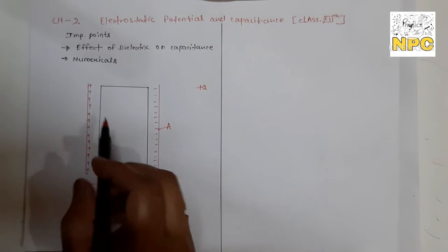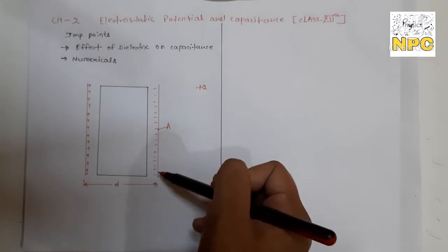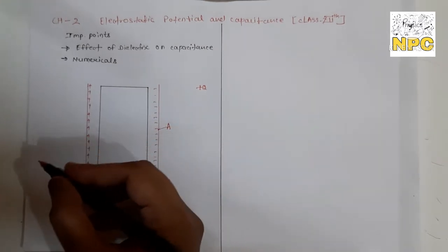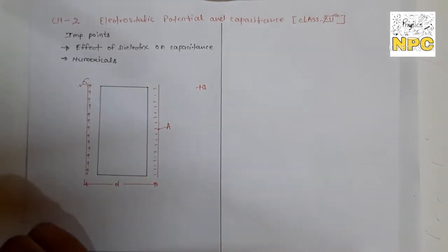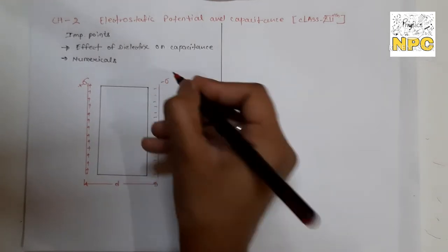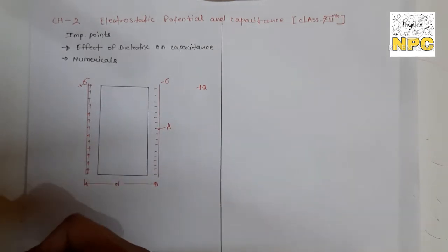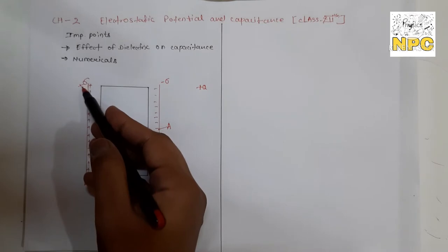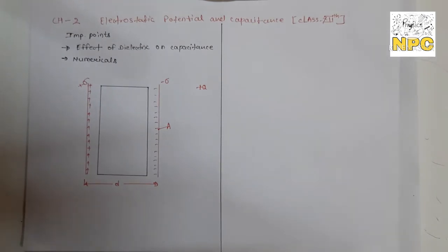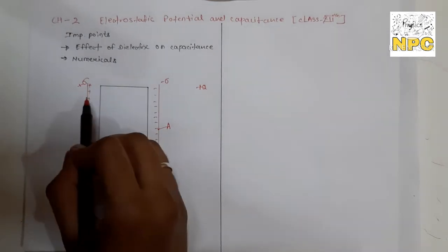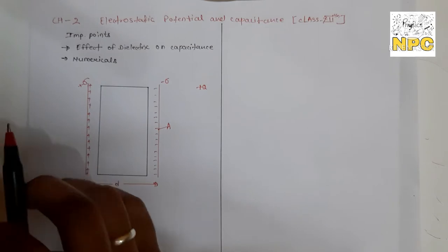Now, surface charge density for these plates: for the positive plate, surface charge density is +σ (sigma), and for the negative plate it is -σ (minus sigma). The electric field is created because charges are available on these plates.